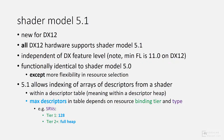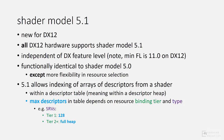Shader Model 5.1 is basically the same as 5.0 with the exception of one major new feature, and that is that Shader Model 5.1 allows indexing of arrays of descriptors from within a shader. These descriptors being indexed are within ranges in a descriptor table, which means they are descriptors in a descriptor heap.